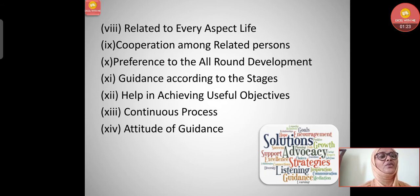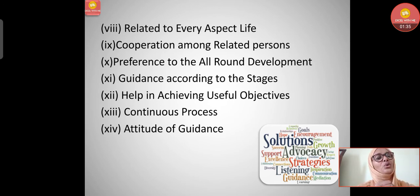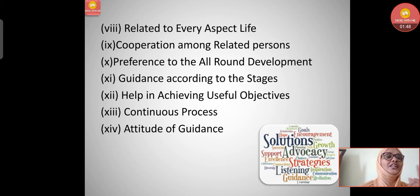Third, preference for all-round development - guidance should always aim at the all-round development of the person. Fourth, guidance according to stages - the same guidance cannot be given to different age groups; different guidance should be provided at different stages. Fifth, help in achieving useful objectives - guidance should help achieve goals that are useful.